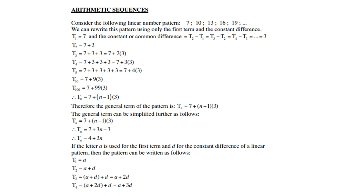We can rewrite this pattern using only the first term and the constant difference. For instance, T₁ is 7, that means the first term is 7, and then the constant difference will be the second term minus the first one is the same as the third term minus the second one is the same as the fourth term minus the third one. And all of them give you a constant difference of 3.